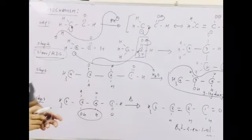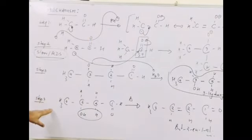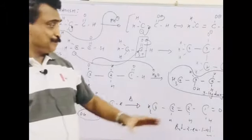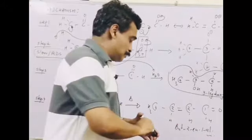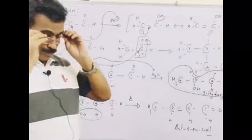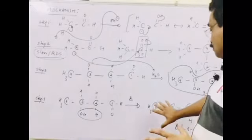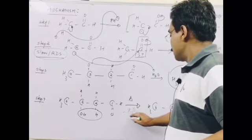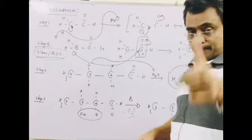This is the complete mechanistic sequence of the reaction. Up to step three, the reaction is referred to as the aldol reaction. After the completion of step four, which involves dehydration (loss of a water molecule), the reaction is termed aldol condensation. So the distinction is: aldol reaction stops at step three; aldol condensation includes the final dehydration step. This is the complete mechanism of aldol condensation.